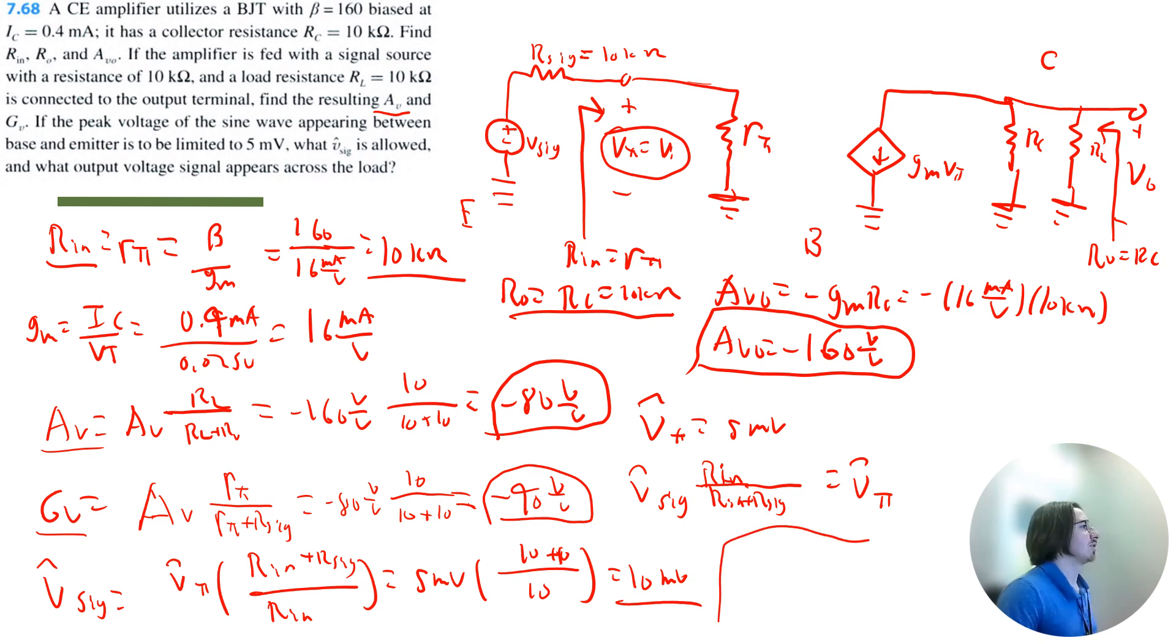And we have one more question. What output voltage signal appears across the load? That's pretty simple. It's just going to be the absolute value of the gain, closed-circuit gain Gv, multiplied by the amplitude of v signal. So that's going to be 40 volt per volt multiplied by 10 millivolts to get 400 millivolts, or 0.4 volts. So that completes this question.